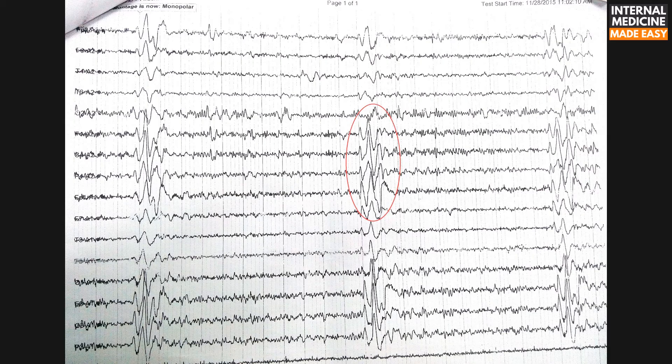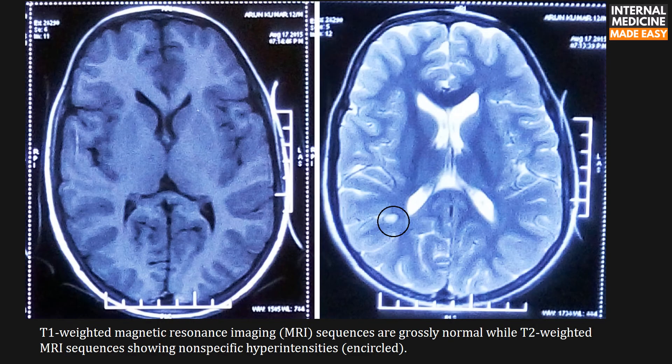In this case, the interval is about eight seconds. This is the MRI of a patient. The first image is a T1 sequence, which is apparently normal. The second image is a T2 sequence, which is showing some non-specific hyperintensities, one of which is shown in a black circle.